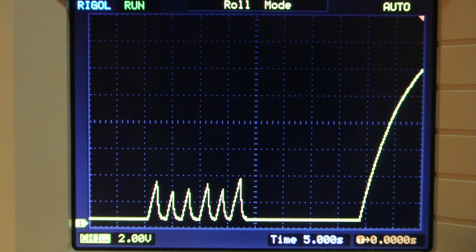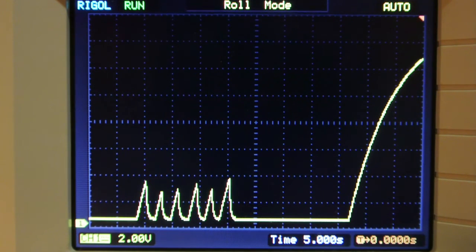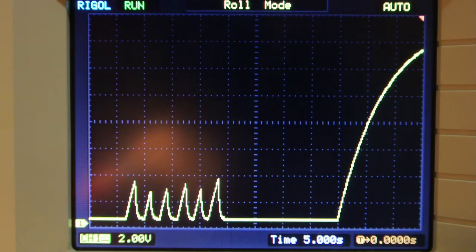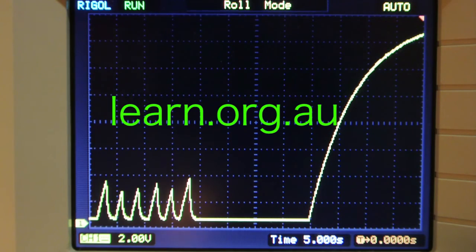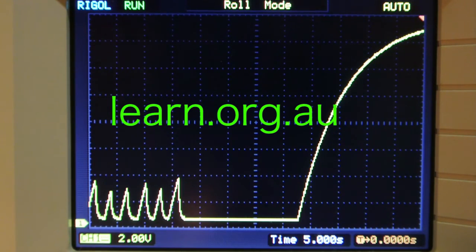Until it's grounded again and again. Shorts out that capacitor. And the capacitor can discharge through the 1K ohm resistor. Which will be across it when the lead is back in the board.